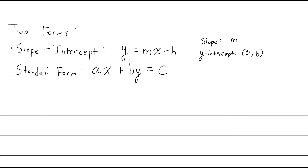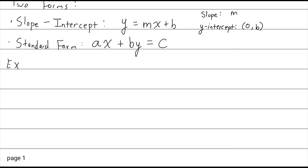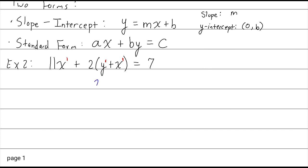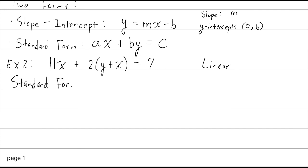Let's do an example where we have to rearrange something. Example 2: we have 11x plus 2 times the quantity (y plus x) equals 7. First, let's determine whether this is a linear equation. I see exponents of 1 everywhere. The 2 being multiplied means that y is really 2y — that doesn't change the exponent, but it's worth noting. So yes, it's definitely linear. Now I want to write this in standard form and slope-intercept form. Let's start with standard form.